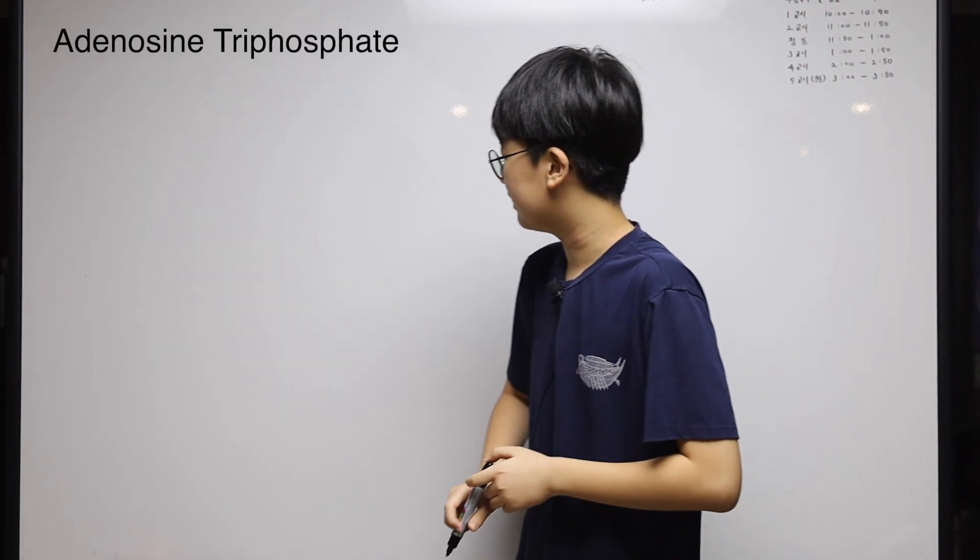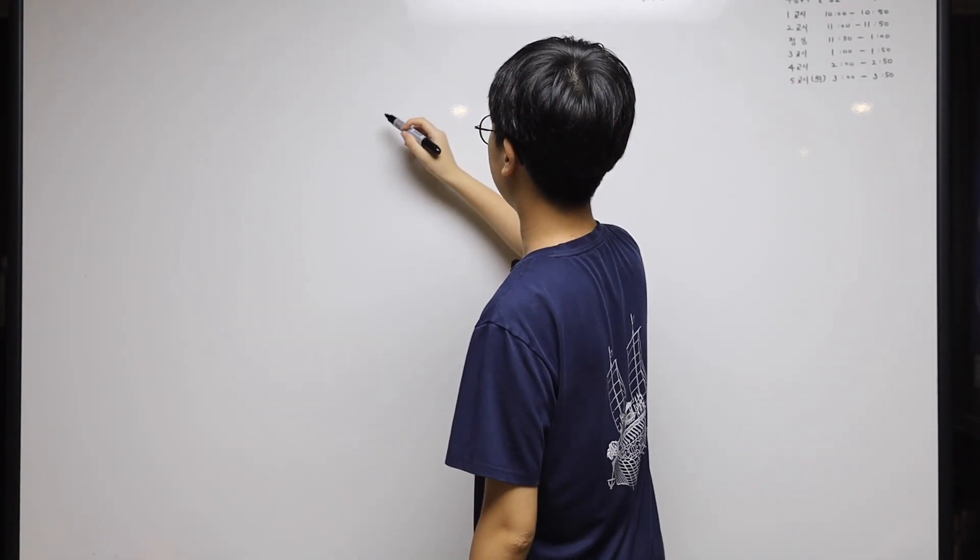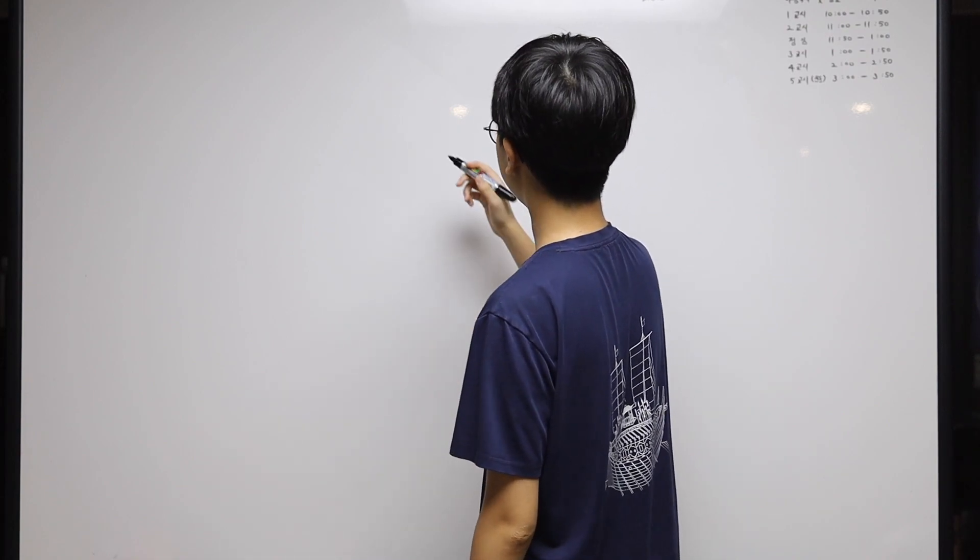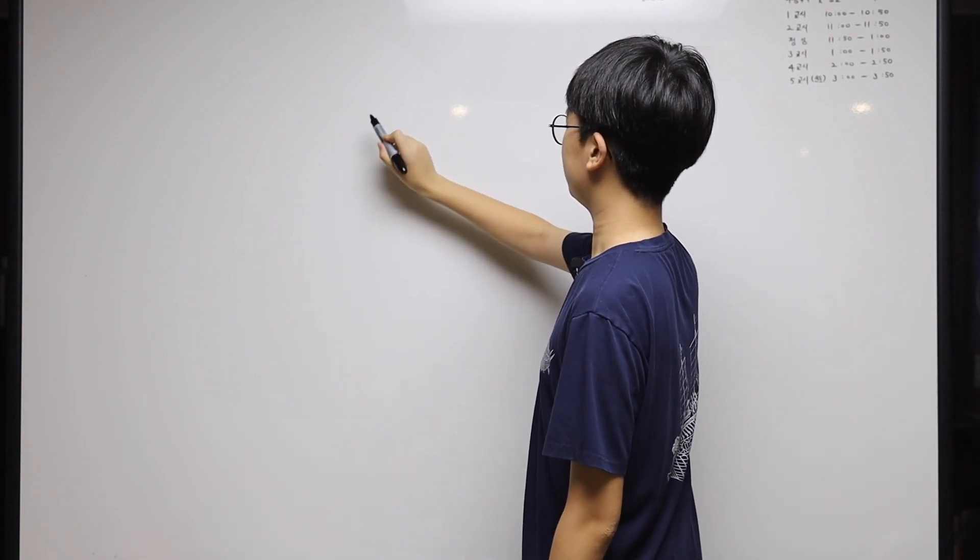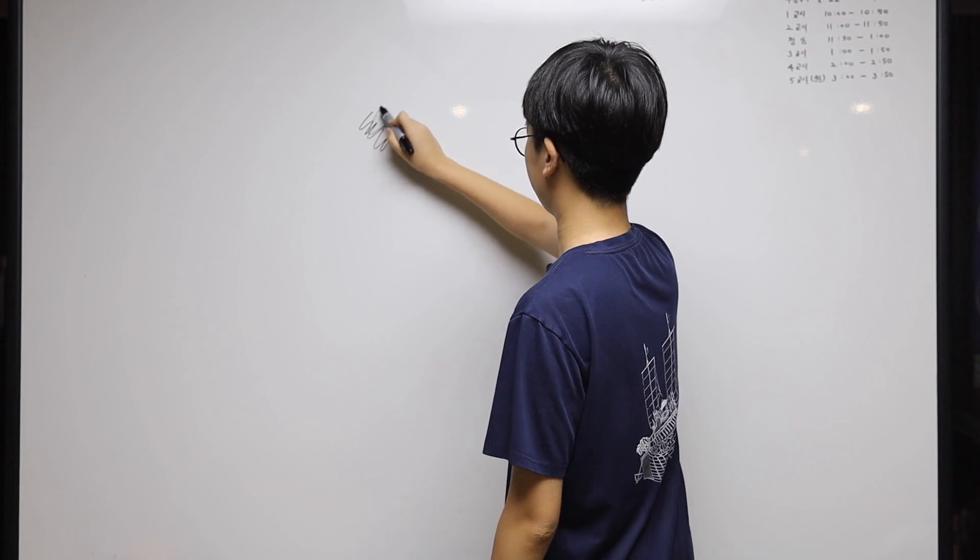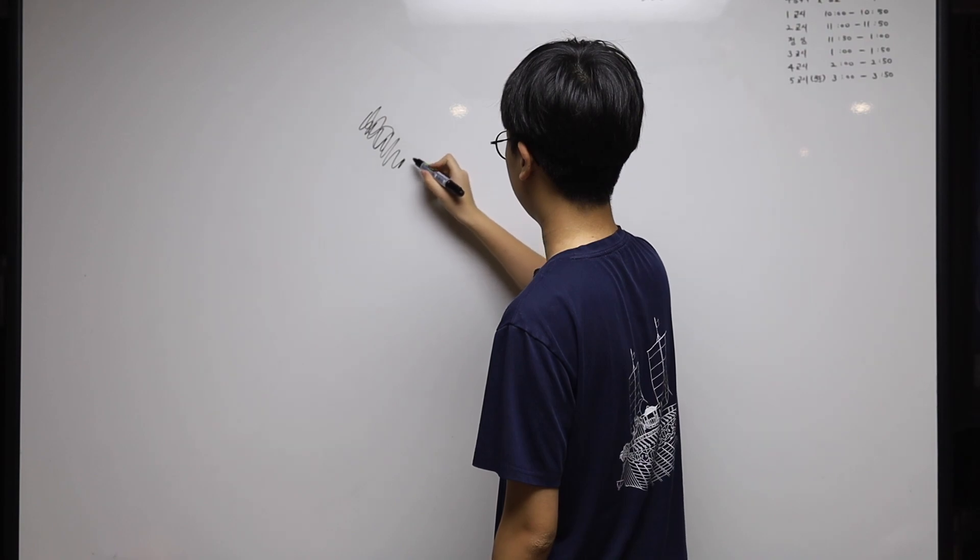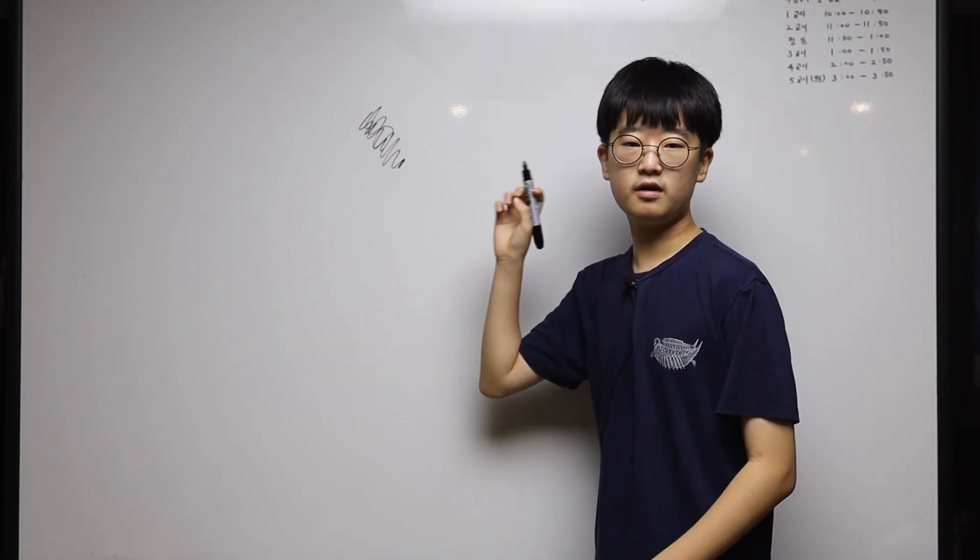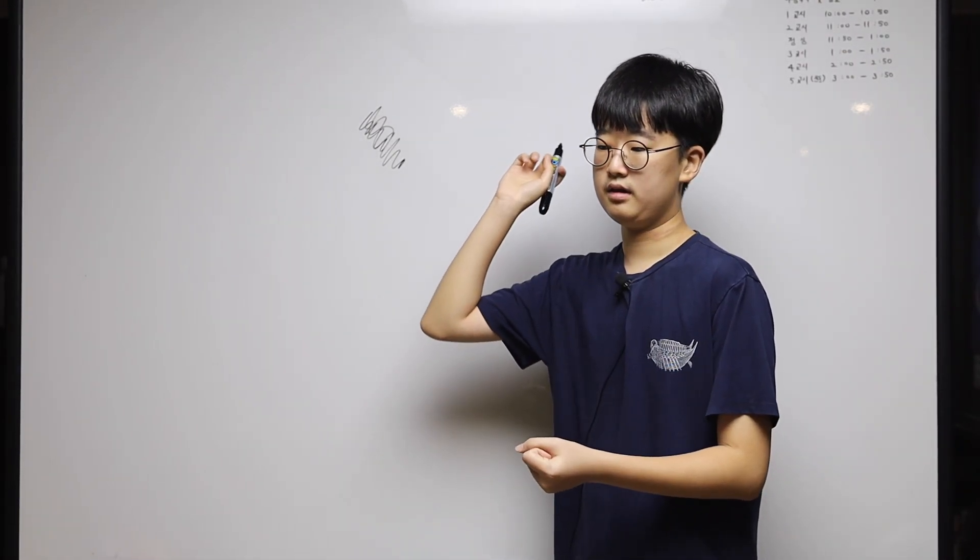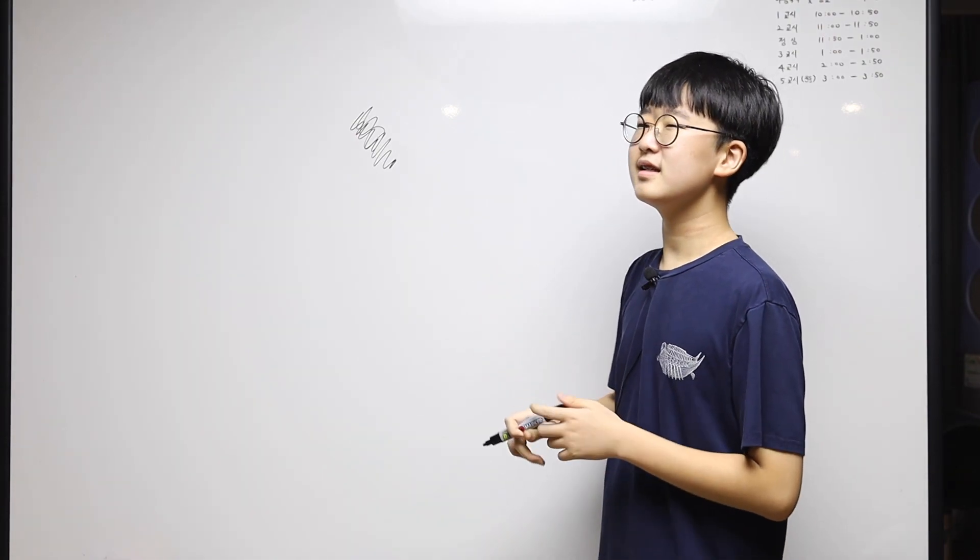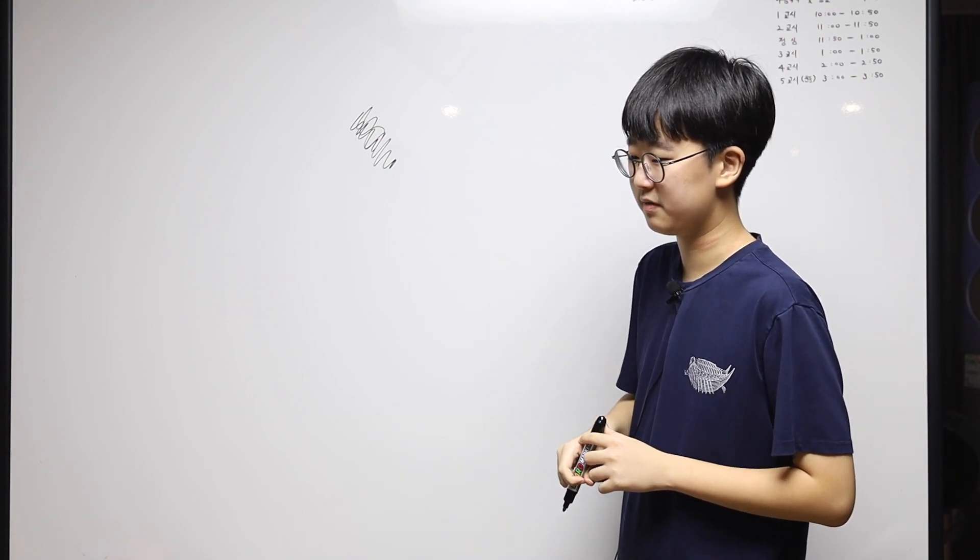What ATP looks like is a bit like this - there's some molecular stuff over here, and then there are three phosphates. What phosphates are - wait, what was the thing in the periodic table called?